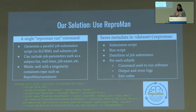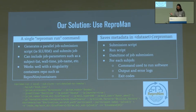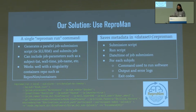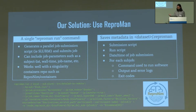The solution we went with was Reproman, which is a Python package. With a single Reproman run command, you can include a bunch of different job parameters — the name of the job, what queue you want it to be in, things like that. It will generate a parallel job submission script. In our case we're using Slurm, and it will submit the job for you.